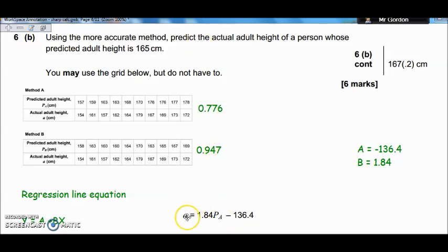Anyway, so what does that mean? Well, it says, if you want to work out someone's actual adult height. If you want to know their actual adult height, then this equals 1.84 times the predicted height, minus 136.4. So for this question, all we've got to do is to replace the predicted adult height, so the PA bit, with 165. And then it will tell us the answer. It will tell us what the actual height of that person should be from the regression line. So I'm going to pull up my calculator and type this in and see what we get.